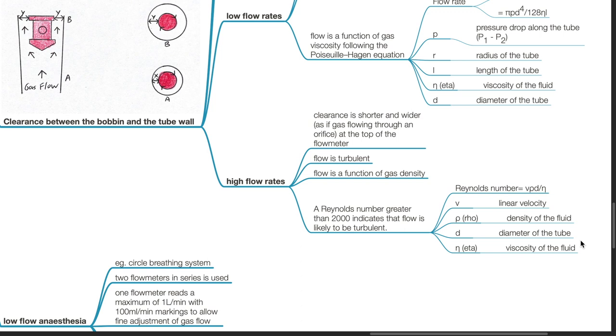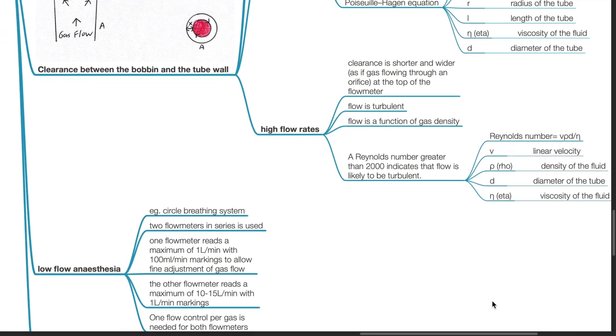Reynolds number is v rho d divided by eta, where v equals linear velocity, rho equals density of the fluid, d is the diameter of the tube, and eta is the viscosity of the fluid.